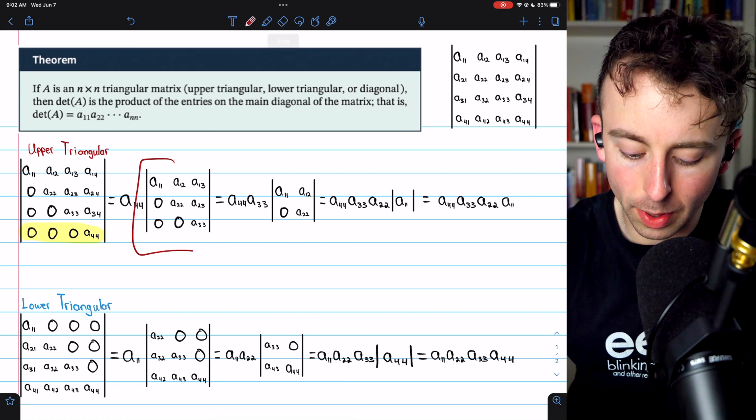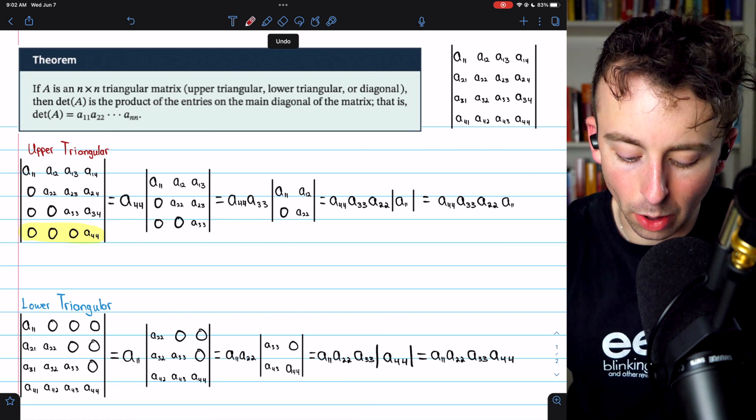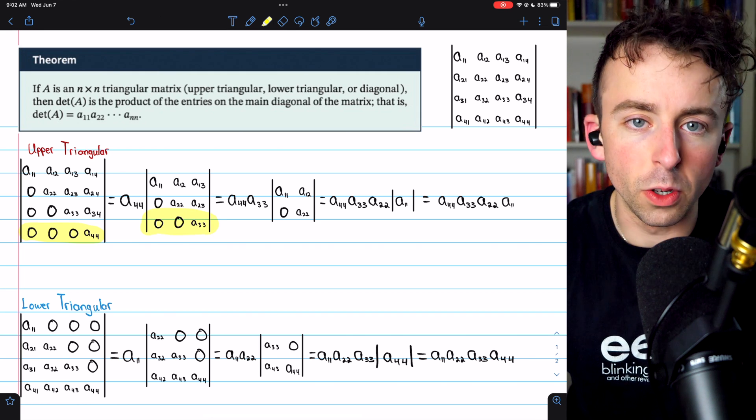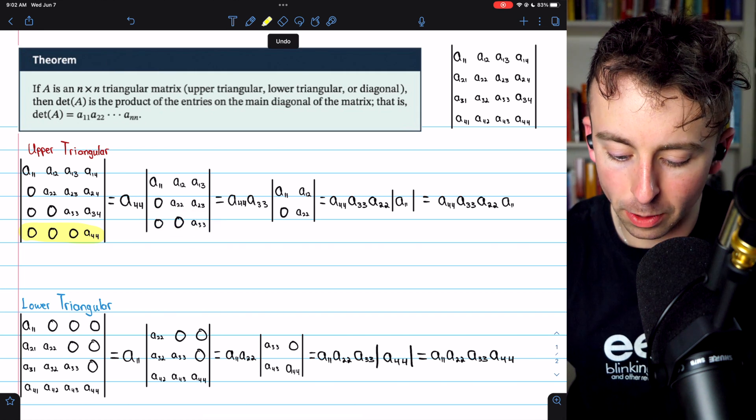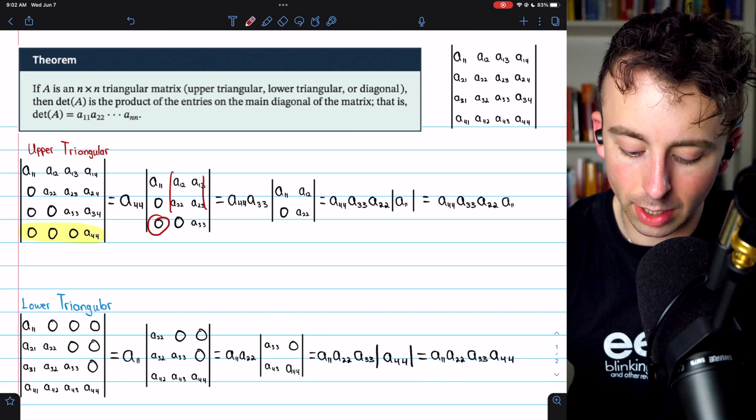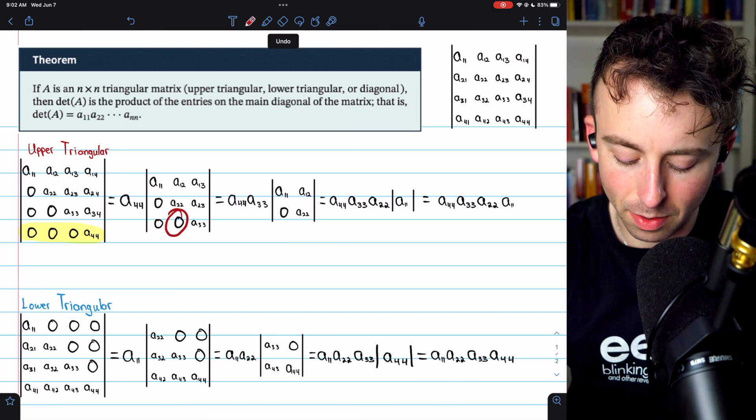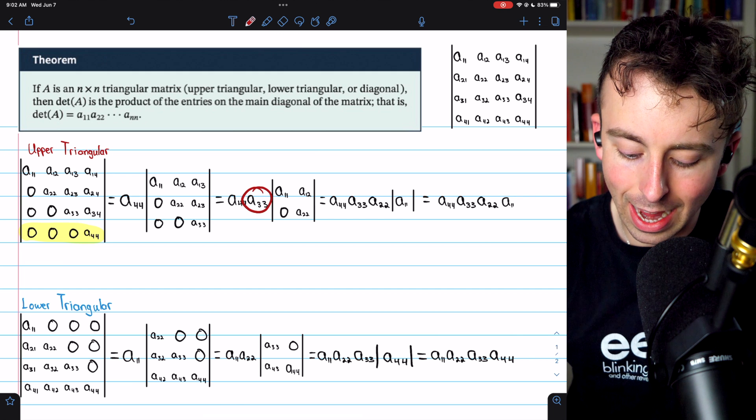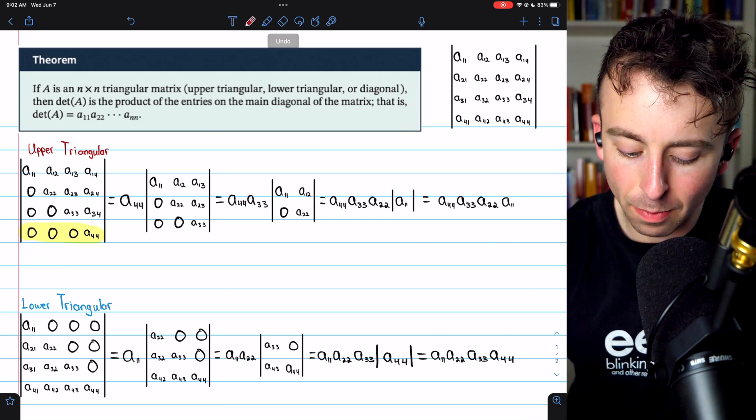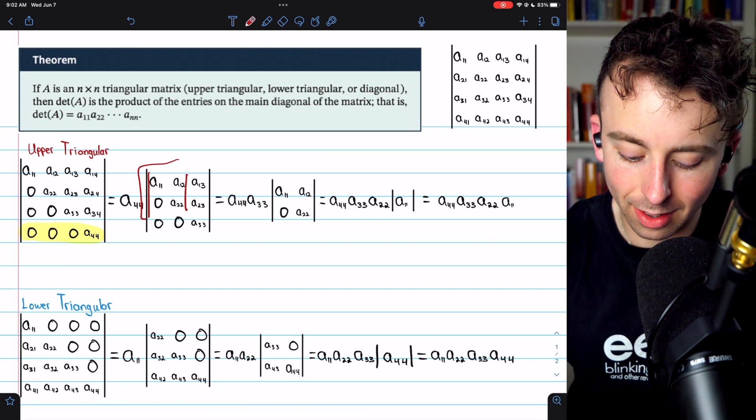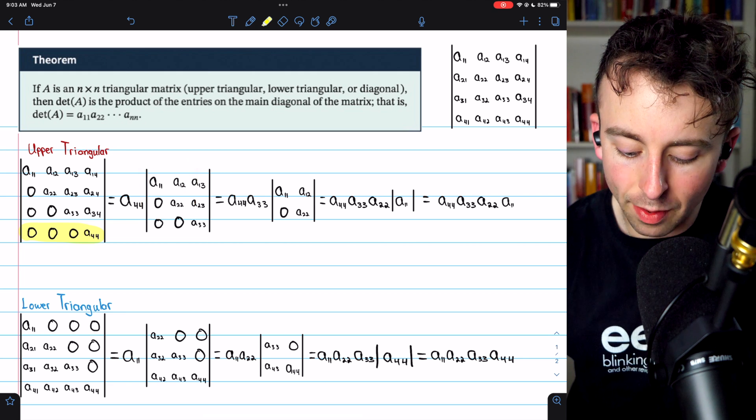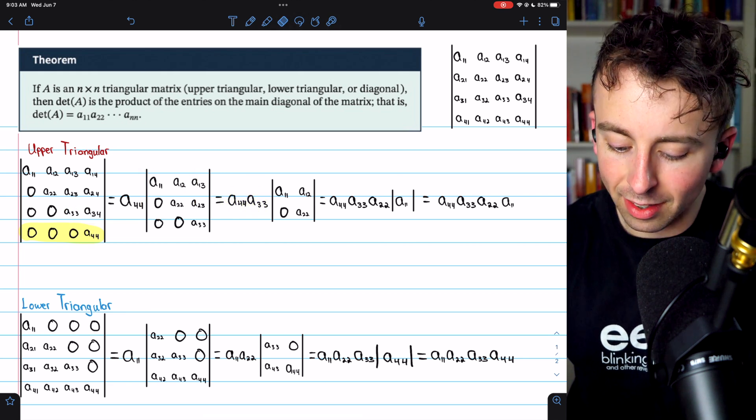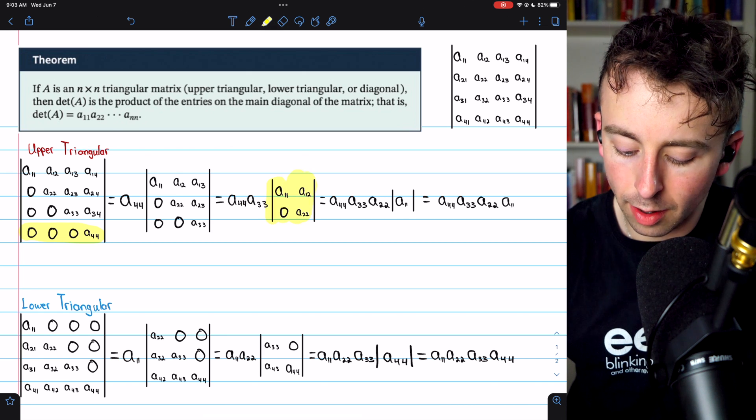So then what is the determinant of this sub-matrix? Well, we can calculate that with a cofactor expansion. And this third row is easy to use because it's mostly zeros. Again, we would have zero times a determinant of that sub-matrix. Same thing here would give us another zero. And then we would multiply by A33 and multiply that by the determinant of this sub-matrix. Now we have A44 times A33, both parts of the main diagonal, and that's getting multiplied by the determinant of this matrix.